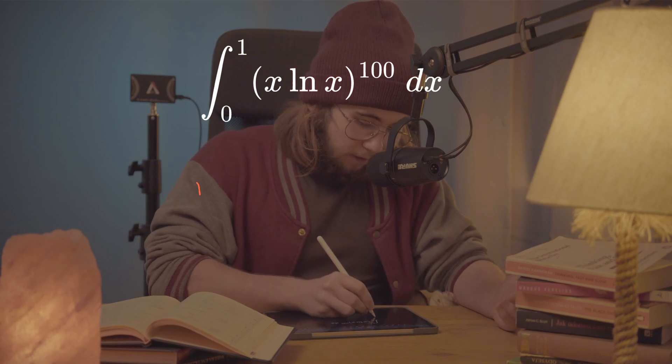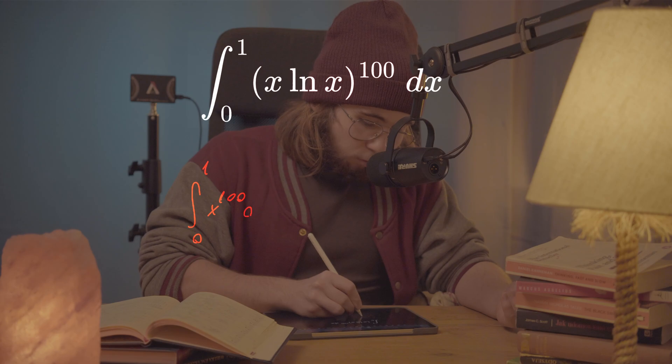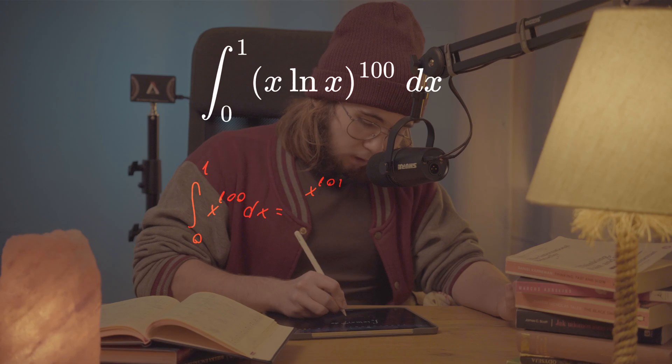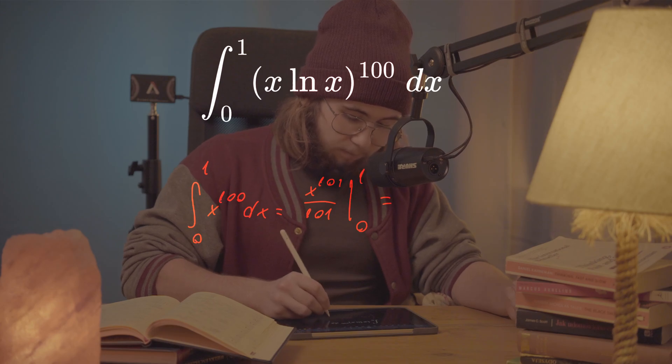If we were just integrating between 0 and 1, x to the power of 100, we know what to do with this. We can just bump up the exponent by 1, making it 101, and then divide by the exponent to get this thing evaluated from 0 to 1, which simplifies to just 1 over 101.